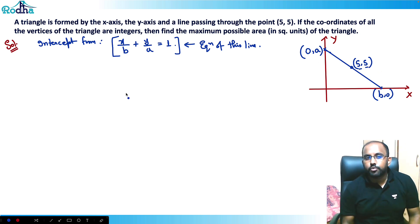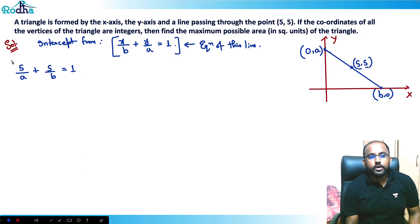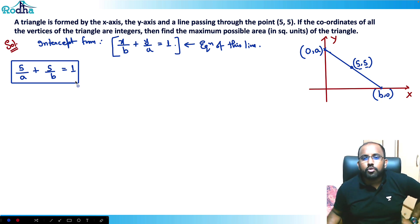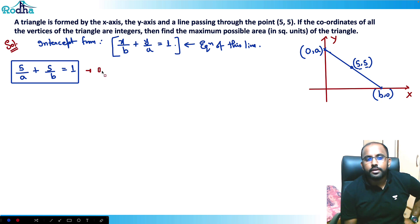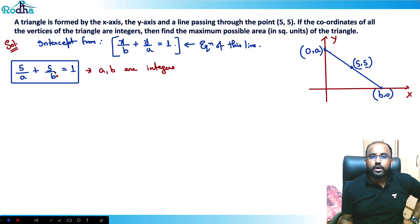Since (5, 5) lies on this line, it satisfies the equation: 5/a + 5/b = 1. Now at this point, a lot of people blindly solve this equation. But since the vertices of the triangle are integers, a and b must be integers.